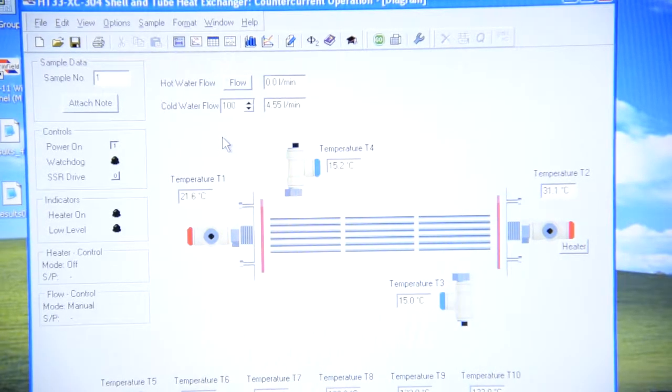After rotating the pressure valve, your numbers for cold water flow should be like this.